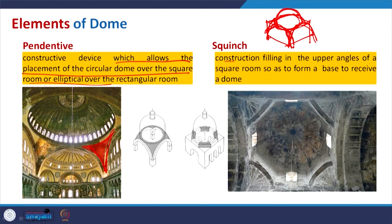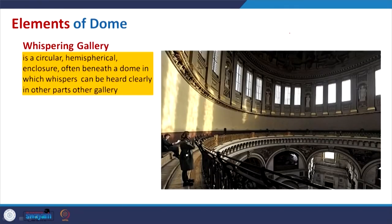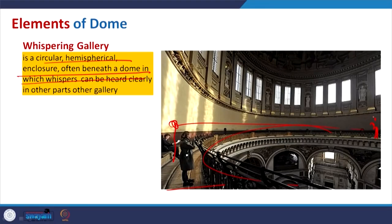The squinch is a construction filling in the upper angles of a square room to form a base to receive a dome — again some things we have to fill in, and that is the squinch. A whispering gallery is a circular or hemispherical enclosure often beneath the dome — it is a space where a whisper made at one point travels around the dome and can be heard at another point. Even in India this can be observed at Golgambuj in the south — if you have visited that you will have experienced this.